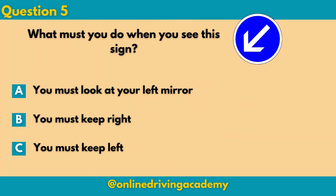Question 5: What must you do when you see this sign? This is a blue sign with a white arrow pointing towards the left direction. A. You must look at your left mirror. B. You must keep right. Or C. You must keep left. The correct answer for this will be C: you must keep left. And if that arrow is flipped pointing towards the right direction, then it is instructing you to keep right.